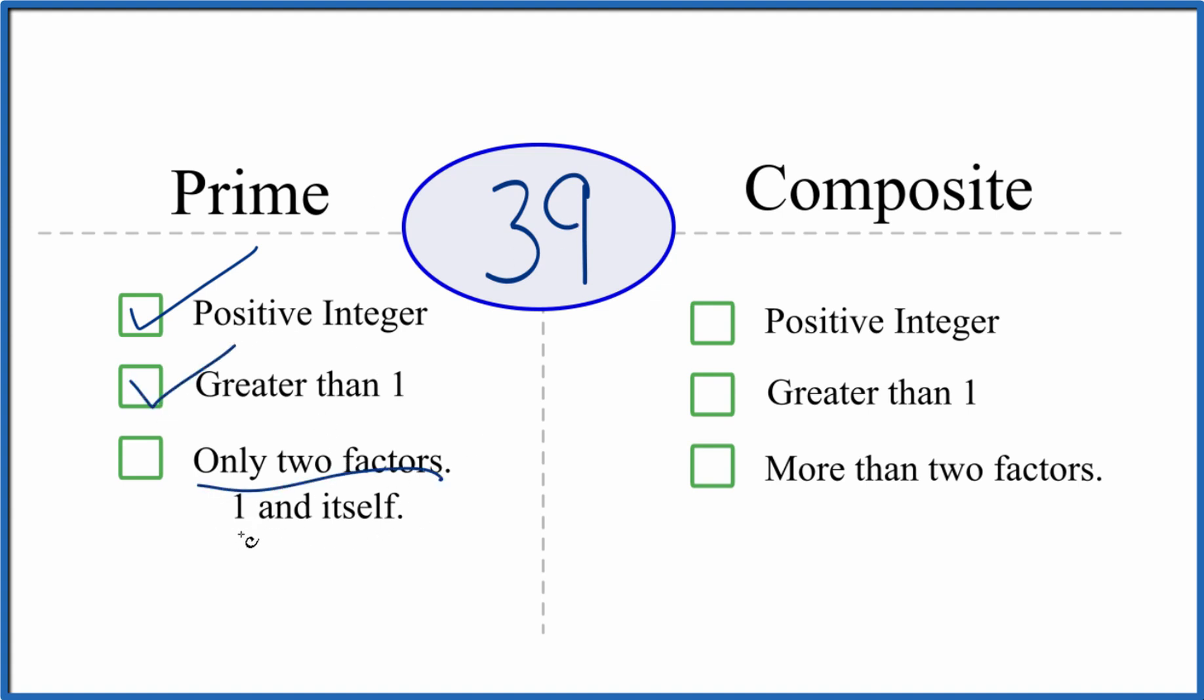And are there only two factors, 1 and 39, that divide evenly into 39? We know that 1 times 39, that gives us 39. So we have two factors. But are there any more?